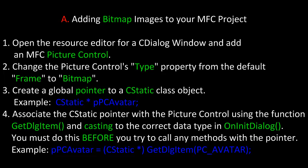To do this, open the resource editor for a CDialog window and add an MFC picture control from the toolbox. Then open the picture control's properties and change the type property from the default of frame to bitmap. Next, create a global pointer to a CStatic class object.